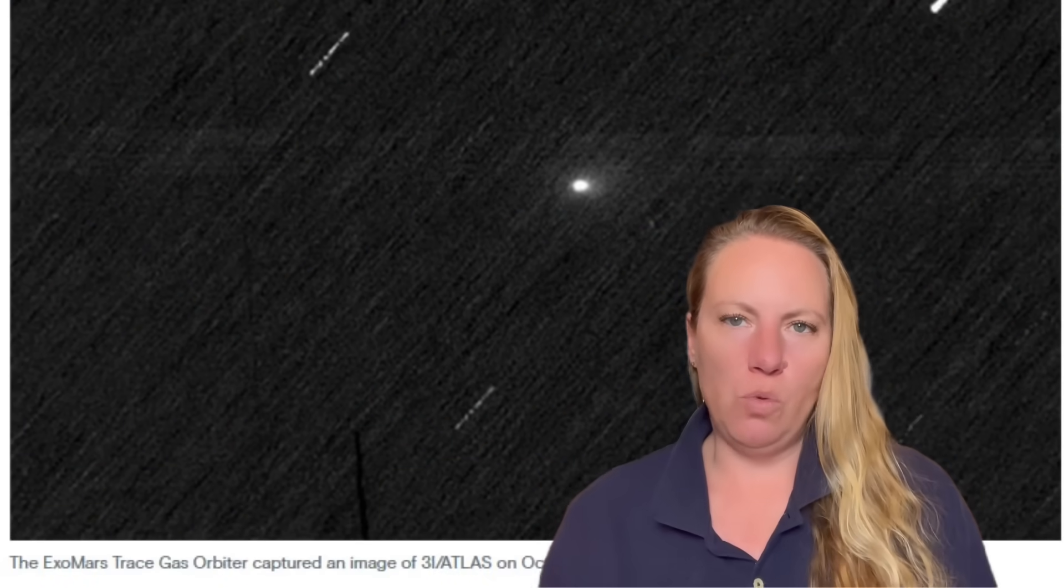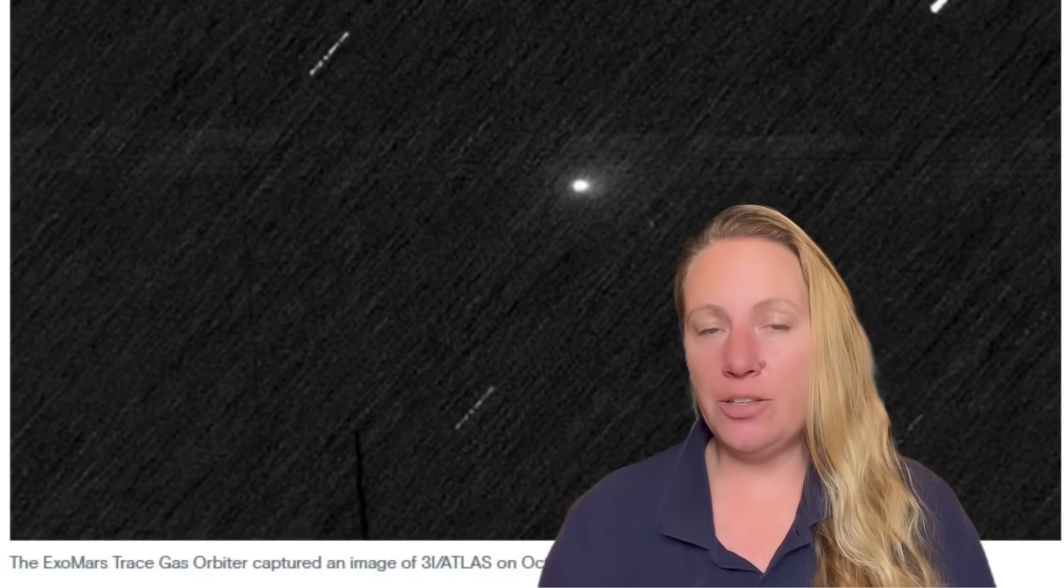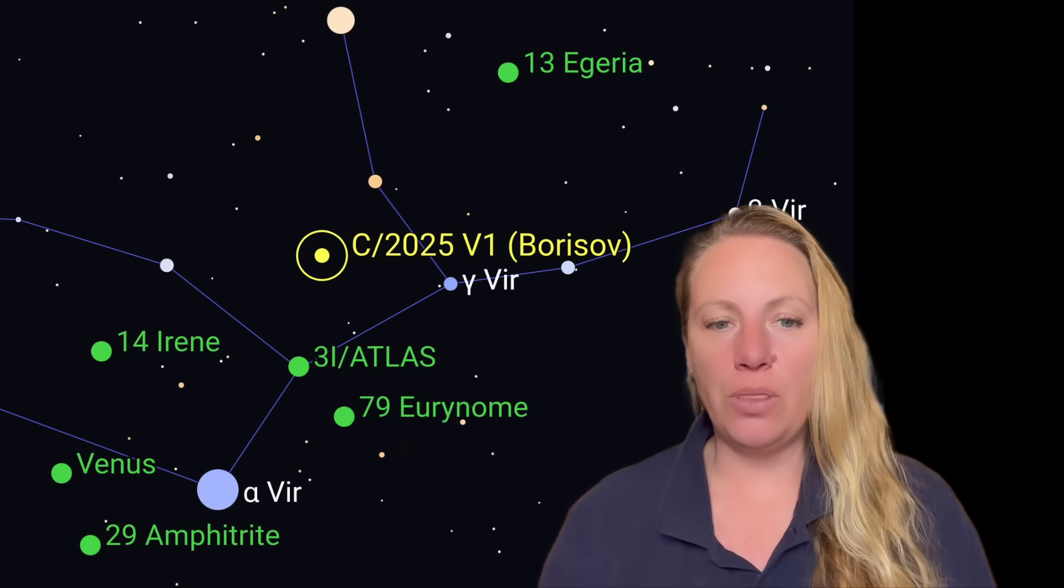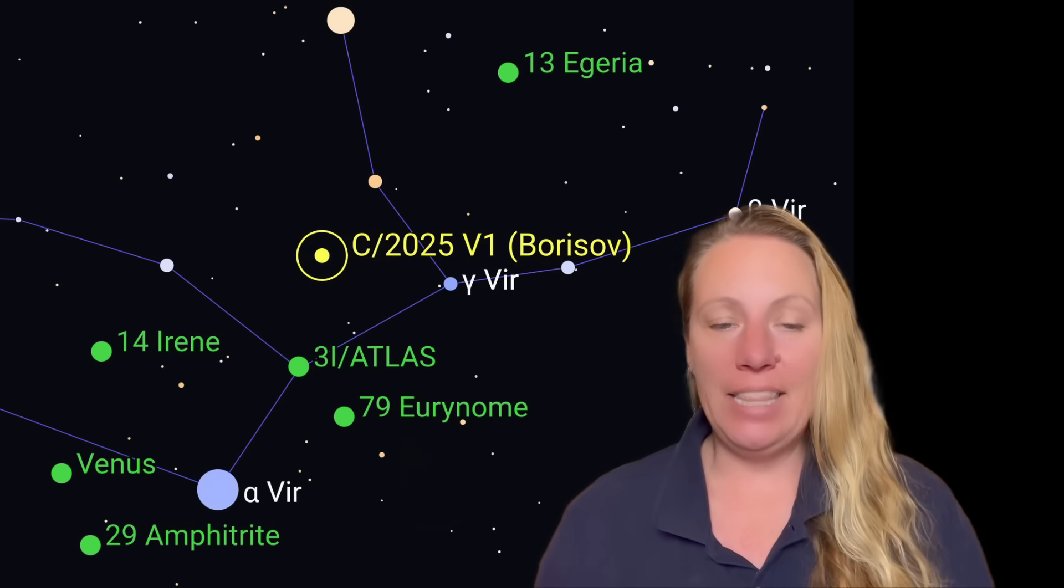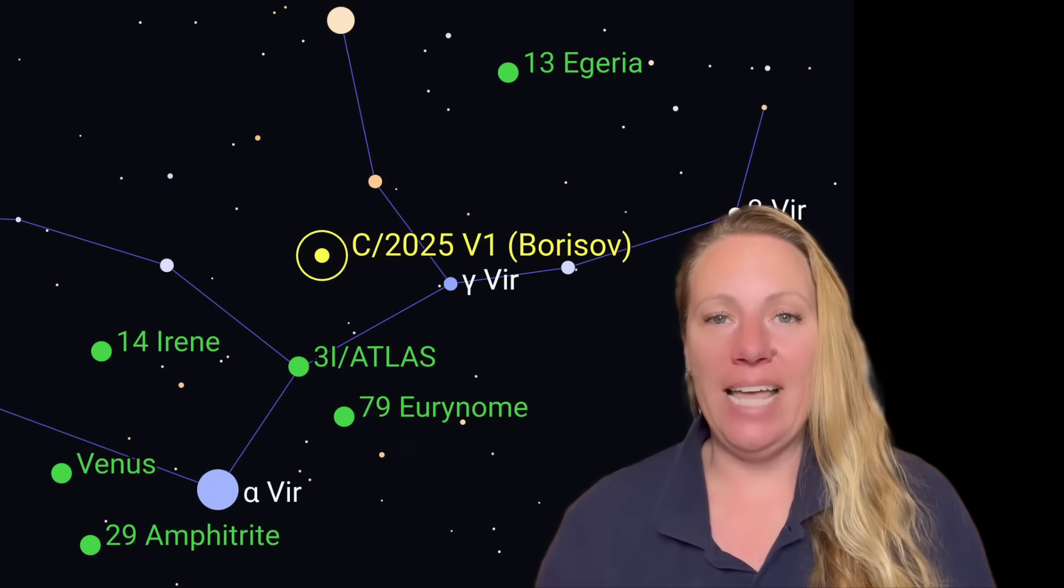So while it was moving between interstellar object 3i/ATLAS and Earth with no tail, that new object was found. And that's a number, guys, I have to put this here, 0.70240 astronomical units away from Earth, which is about five and a half months away. So cool that we have discovered it already.